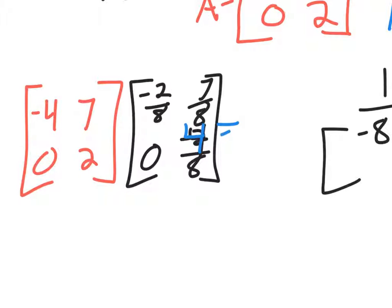So when we do that, it's going to be a 2 by 2 matrix for our answer matrix. And so the first one is found by taking row 1, column 1. Negative 4 times negative 2 over 8 is 1. 7 times 0 is 0. So 1 plus 0 gives us 1.